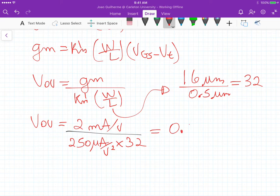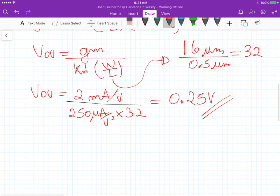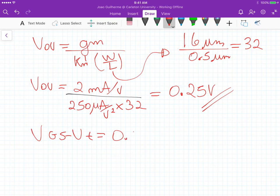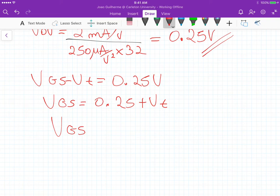and this gives us an overdrive voltage of 0.25 volts. Now because we know that the overdrive voltage equals VGS minus VT equals 0.25 volts, VGS is actually the overdrive voltage plus the threshold voltage, and that is 0.25 plus the threshold voltage that in our case is 0.5 volts